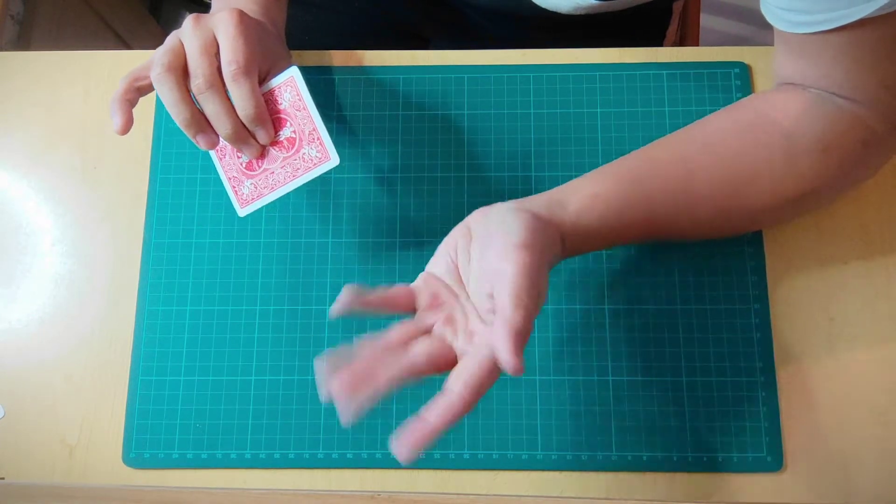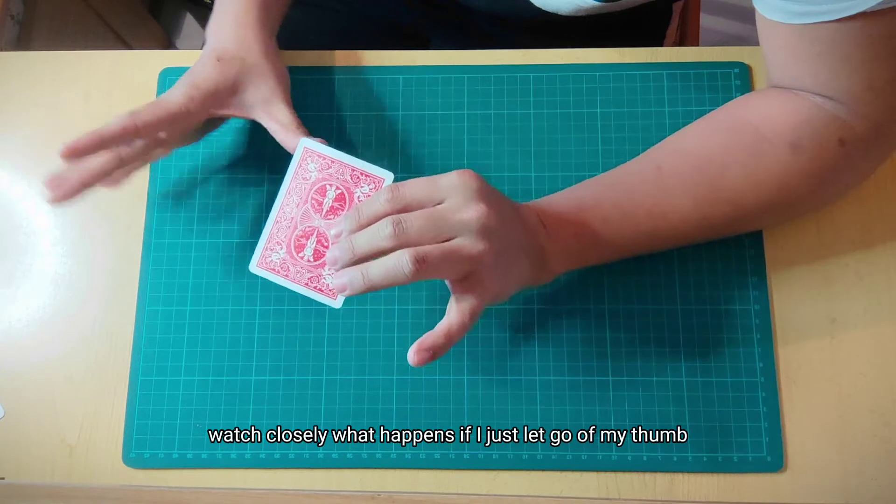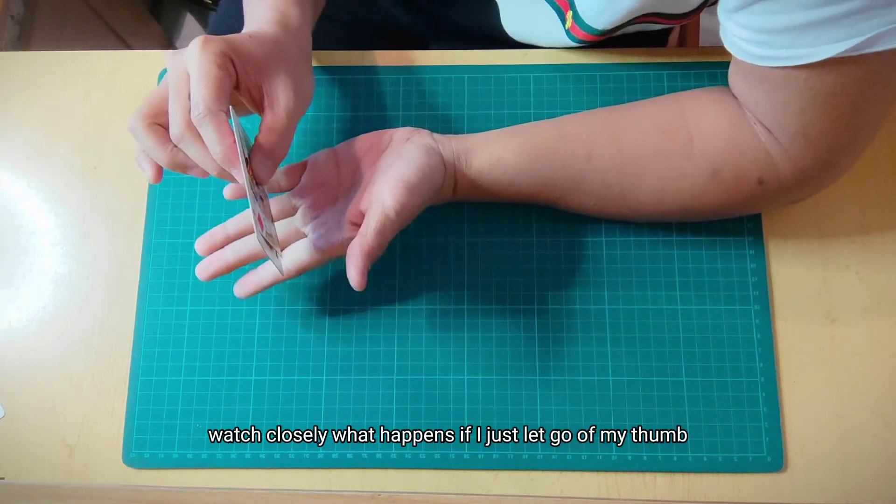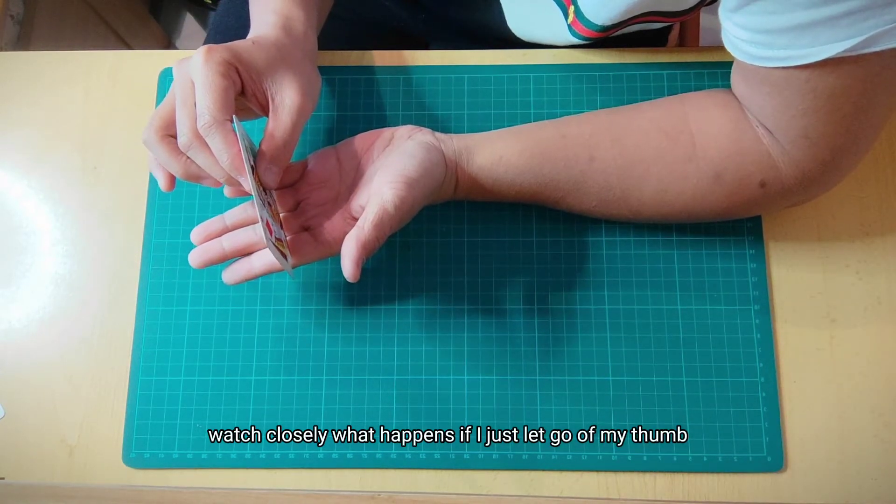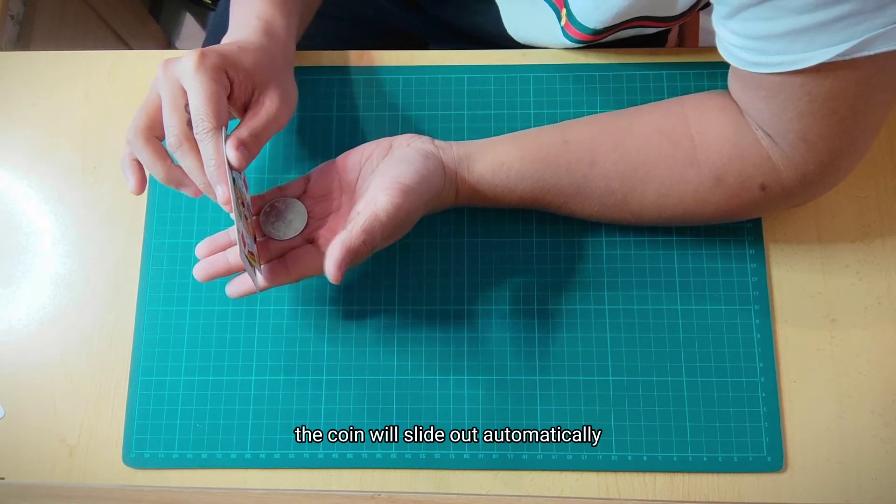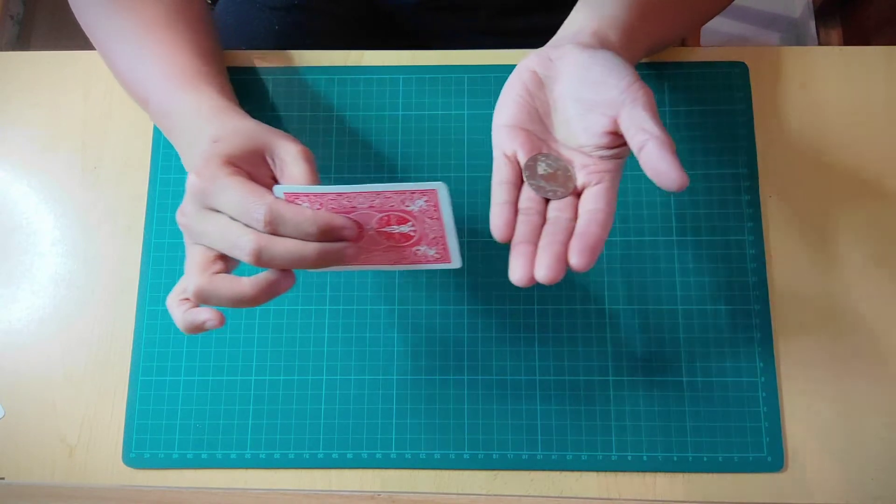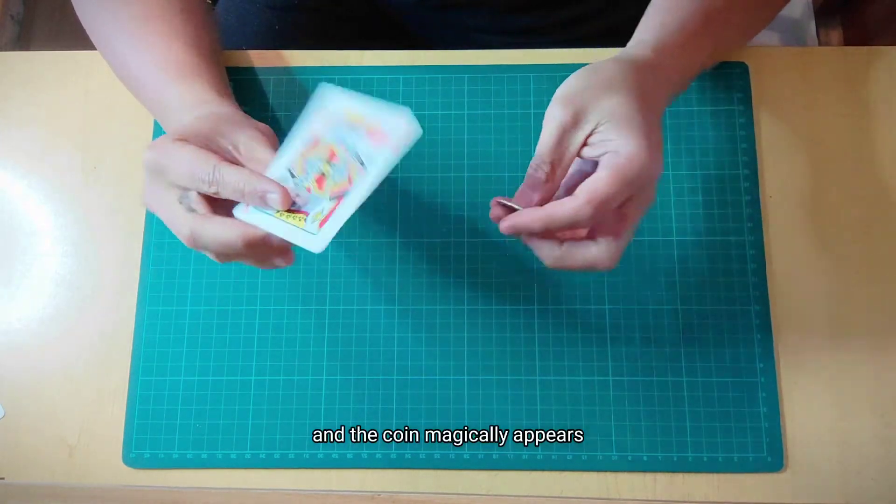You can show your hands empty, but you have it here. Now watch closely what happens. If I just let go of my thumb, the coin will slide out automatically. That's what happens. When I let go.